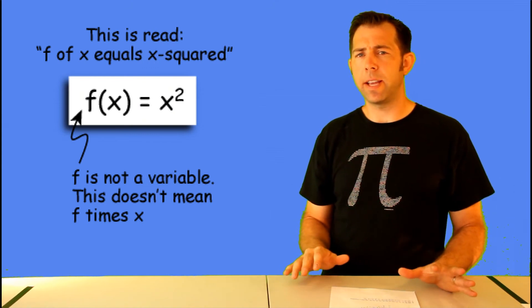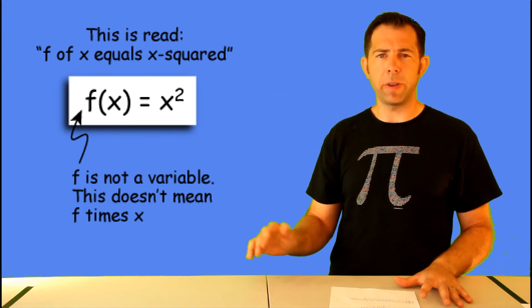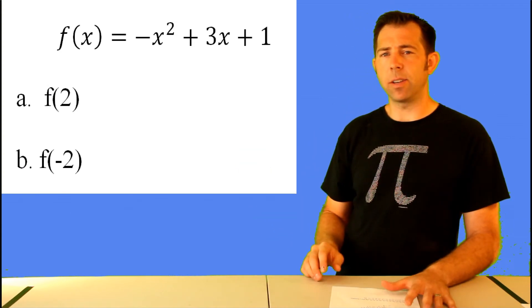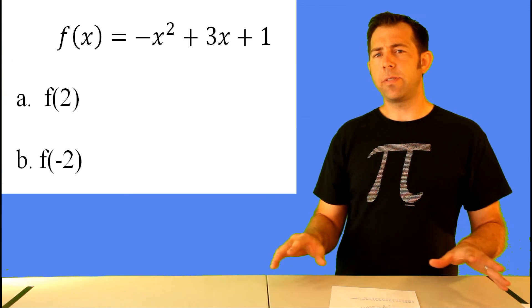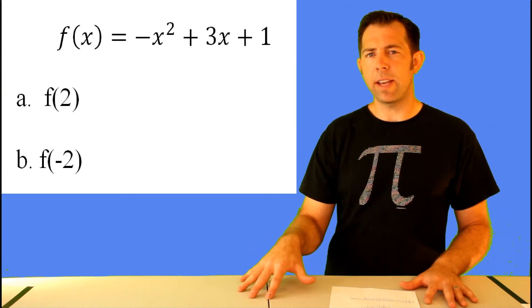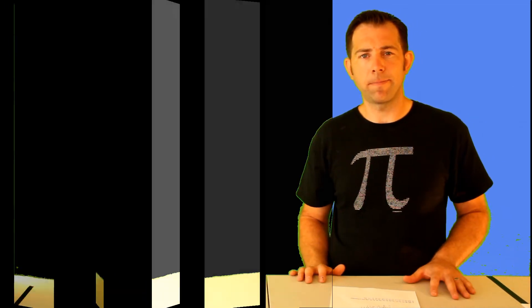So for this last example, we're going to pay special attention to the use of parentheses when we input into functions. So in this case, we've got f of x equals negative x squared plus three x plus one. Pause the video, find f of two and f of negative two, and we'll see if we end up with the same thing.